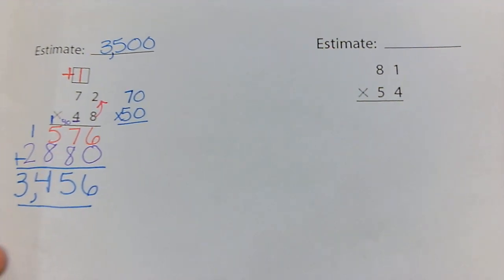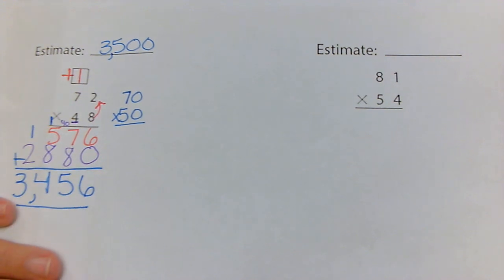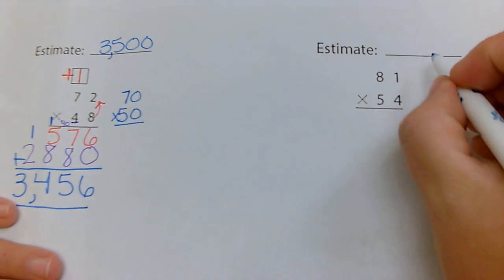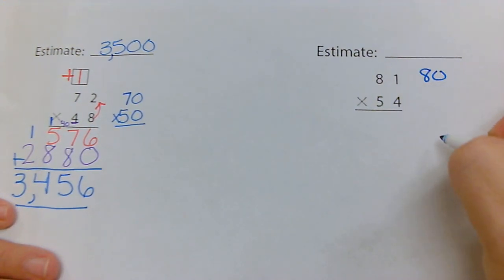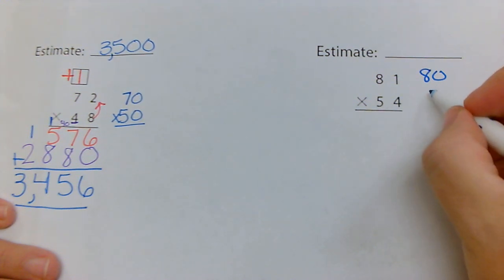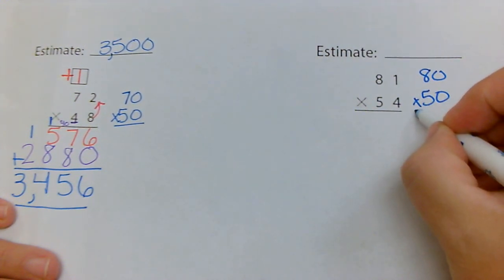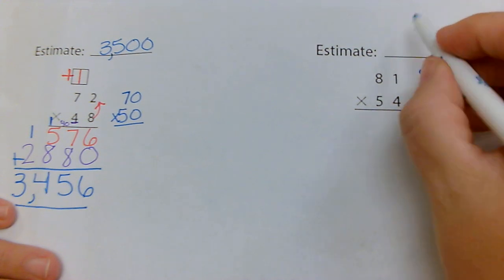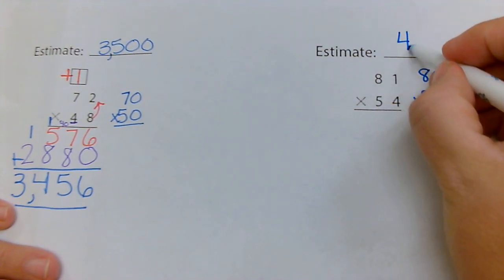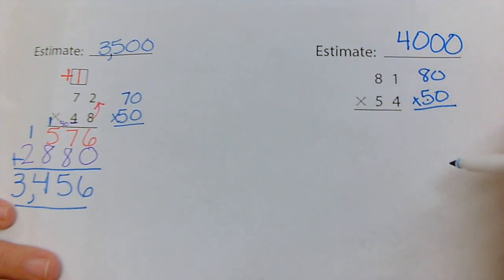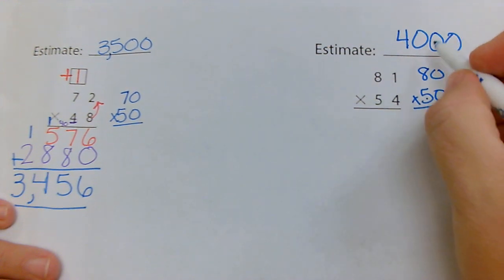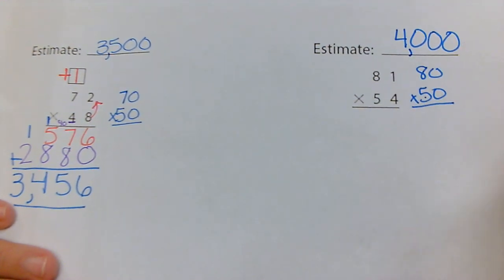Let's look at the next one. I'm going to start with estimating again. I'll round 81 to 80 and round 54 to 50. Eight times five is 40, with two zeros that's 4,000. So my answer should be close to 4,000.